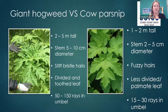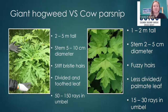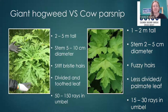Giant hogweed can grow two to five meters tall, whereas cow parsnip only grows one to two meters. The stem is five to ten centimeters in diameter for giant hogweed versus two to five centimeters for cow parsnip. Giant hogweed has stiff bristly hairs, whereas cow parsnip has softer fuzzy hairs on the stem and leaves. The leaf structure is quite different: in giant hogweed the leaves are more divided and sharply toothed, while cow parsnip has less divided, more palmate leaves that kind of look like a hand.